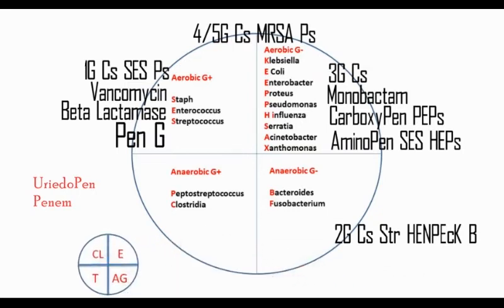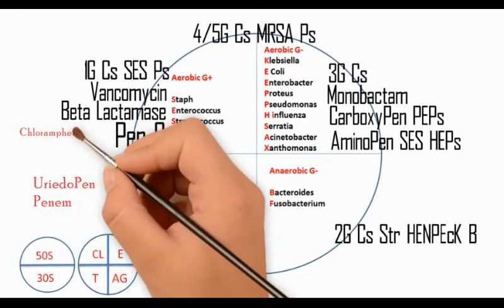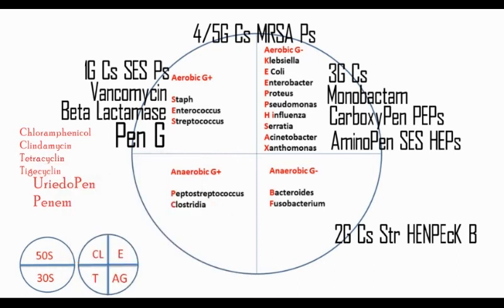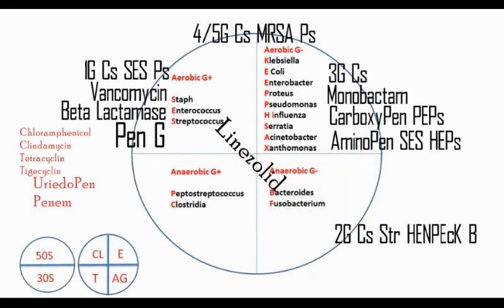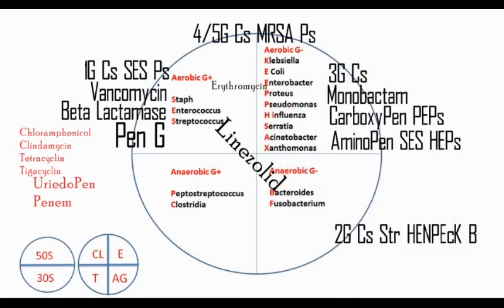The mnemonic 'CLEAN TAG' helps remember ribosomal inhibitors. Chloramphenicol, Clindamycin, and Linezolid, along with Erythromycin, act against the 50S subunit. Tetracycline, tigecycline, and aminoglycosides act against the 30S subunit. Chloramphenicol, Clindamycin, Tetracycline, and Tigecycline have the broadest spectrum. Linezolid is active against gram-positive and anaerobic organisms. Erythromycin covers only aerobic organisms with no activity against anaerobes.